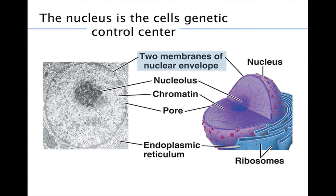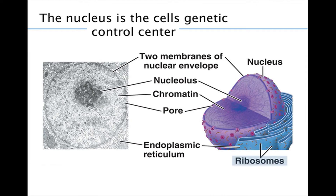The nuclear envelope connects with the cell's network of membranes called the endoplasmic reticulum. The nucleolus, a prominent structure in the nucleus, is a site where a special type of RNA called ribosomal RNA is synthesized according to instructions in the DNA. The nucleus directs protein synthesis by making messenger RNA according to instructions in the DNA. The messenger RNA moves through the pores to the cytoplasm and is translated by ribosomes into the amino acid sequences of proteins.